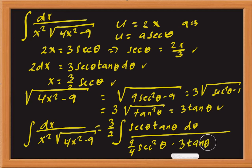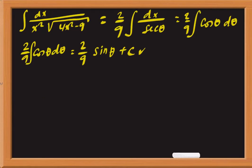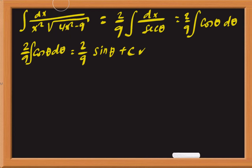We simplify: tangent theta cancels in the numerator and denominator, secant theta appears squared in the denominator and once in the numerator, and simplifying the constants 3, 2, and 4 gives a 2 in the denominator. This flips to give us 2/9 times the integral of d theta over secant theta, which equals 2/9 times the integral of cosine theta d theta. That is definitely equal to 2/9 sine theta plus a constant.